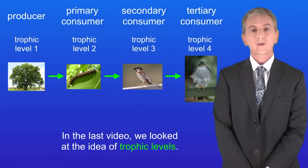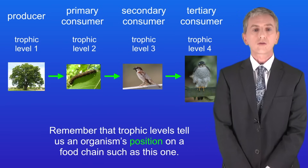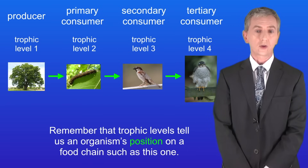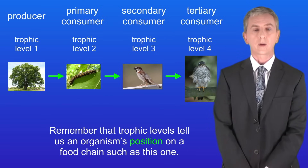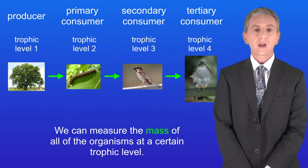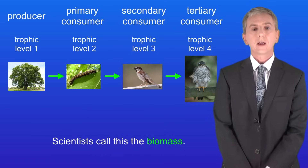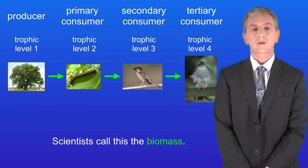In the last video we looked at the idea of trophic levels. Remember that trophic levels tell us an organism's position on a food chain such as this one. Now we can measure the mass of all the organisms at a certain trophic level, and scientists call this the biomass.